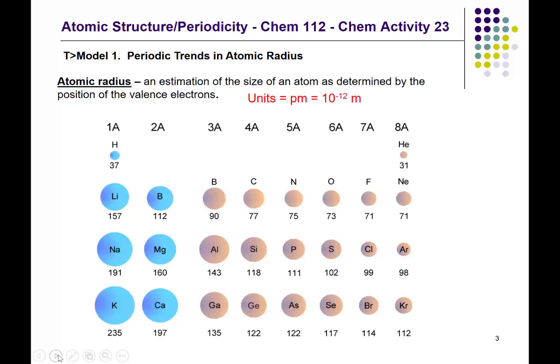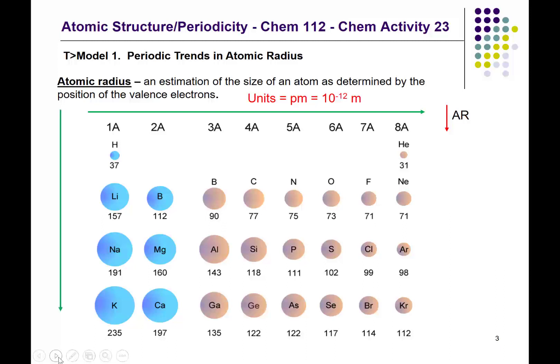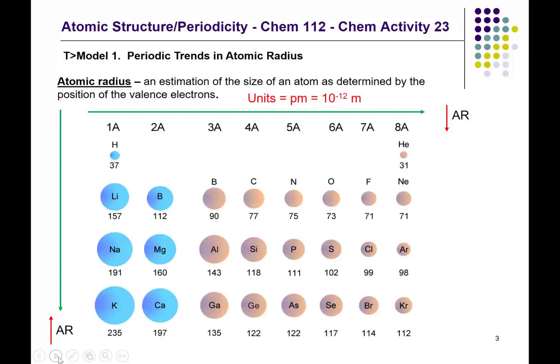Looking at the diagram, the trends are fairly obvious. Across the periodic table, the atomic radius decreases. Down the periodic table, the atomic radius increases. This doesn't apply in all situations — for example, when comparing aluminum to gallium, the size actually goes down. These anomalies are difficult to explain and may be tied to measurement techniques. You should be aware of the general trend.